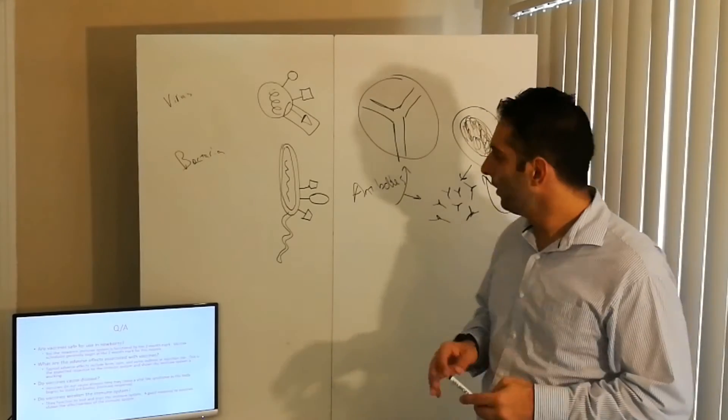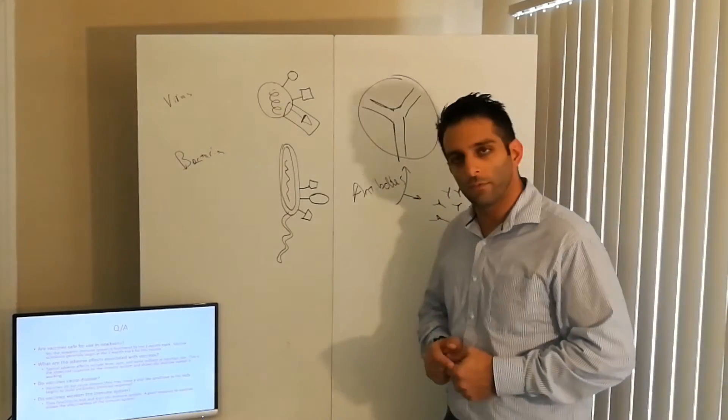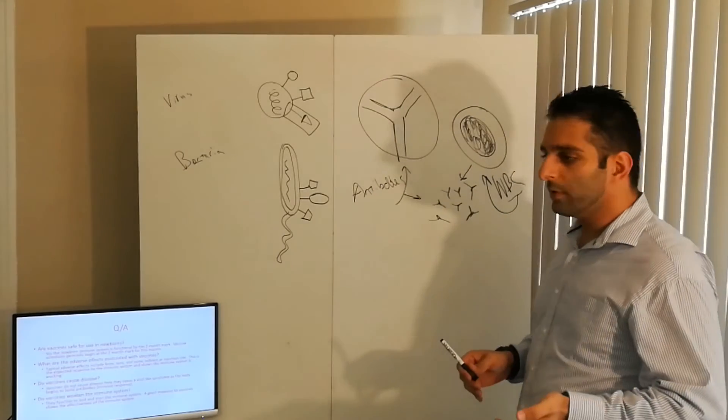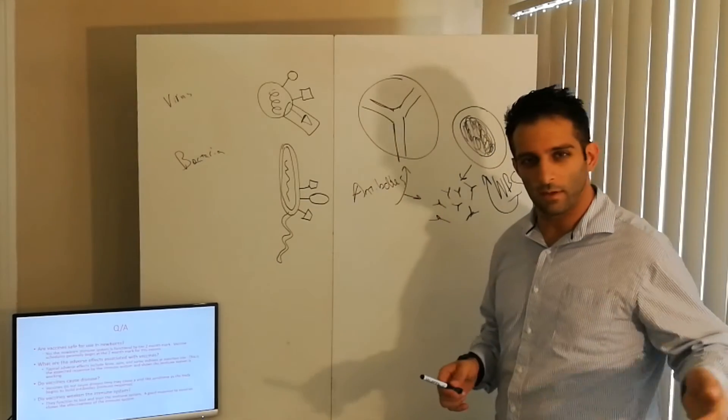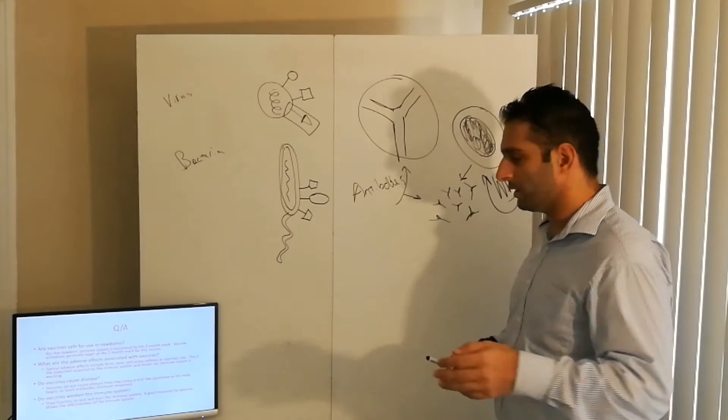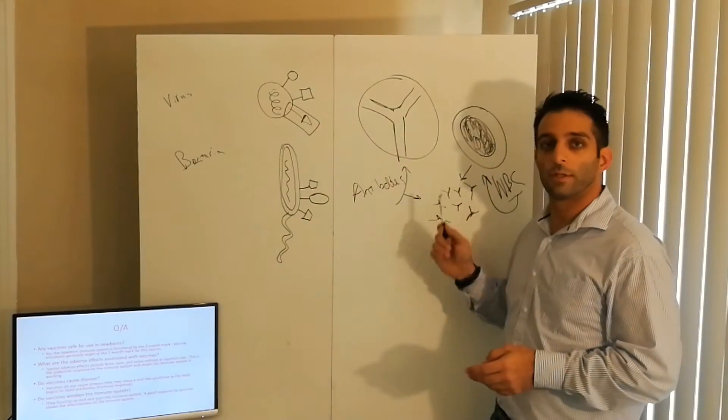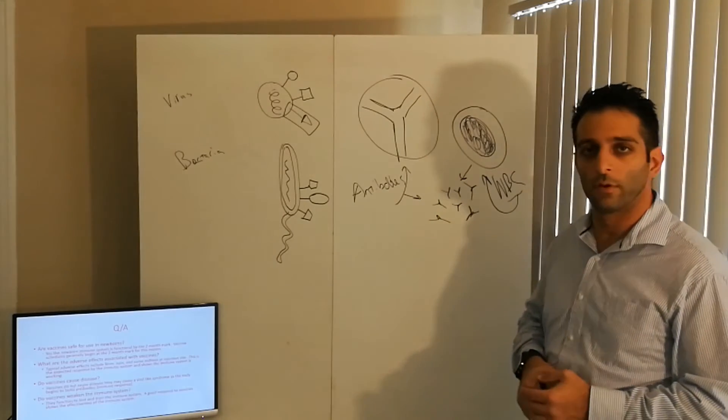So kind of talked about how they work. Some common questions. Are they safe for newborns? Yes. So vaccines, like I said, newborns typically get vaccines right around the two-month window and they start two, four, six months forward. My blood cells become mature at that point and can produce antibodies. You can give a vaccine to a newborn. It's like a month old.